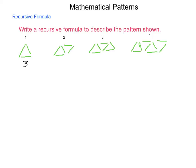In our second figure, we end up with two triangles and it has a total of five sticks. Number three has three triangles and it uses seven sticks.